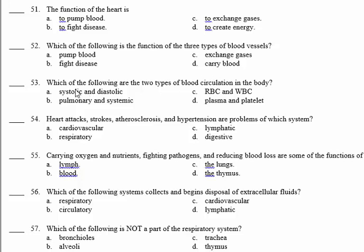Number 53, which of the following are the two types of blood circulation in the body? We have one circulation in which the heart pumps blood to the lungs and another in which the heart pumps blood to all of the systems. These types of circulation are pulmonary and systemic. 53, B.